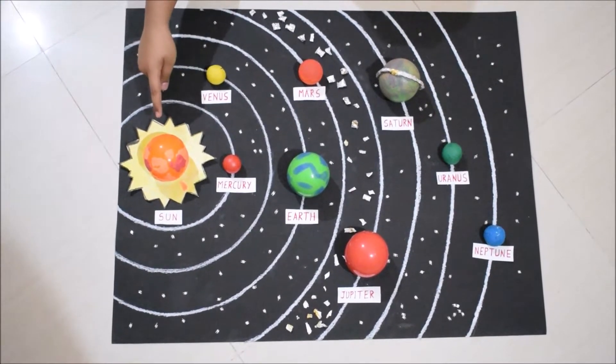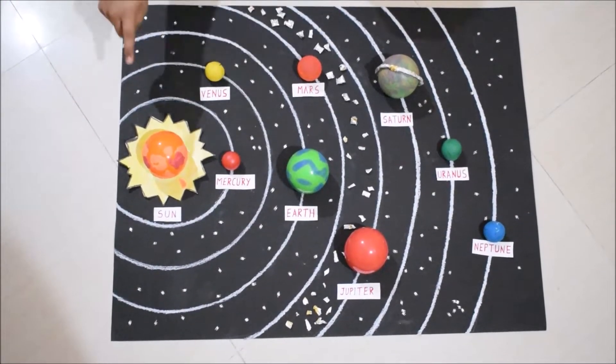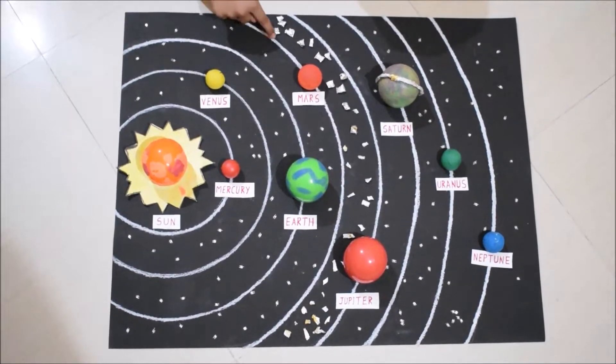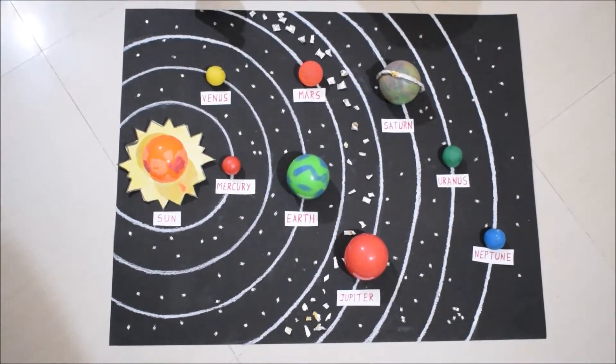The Sun is in the center and all eight planets are revolving around the Sun in fixed paths called orbits.